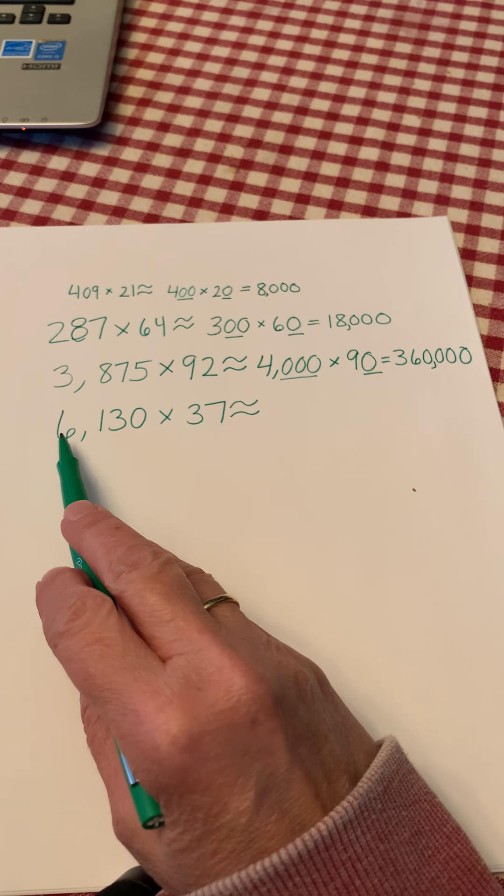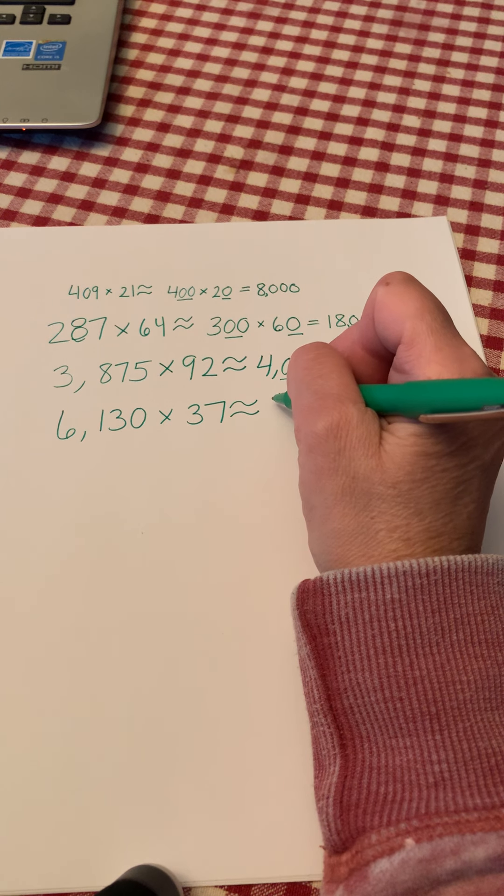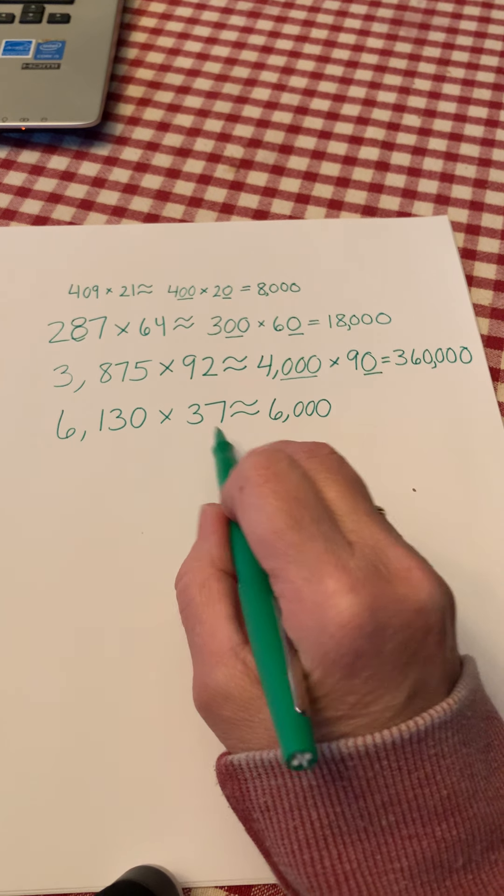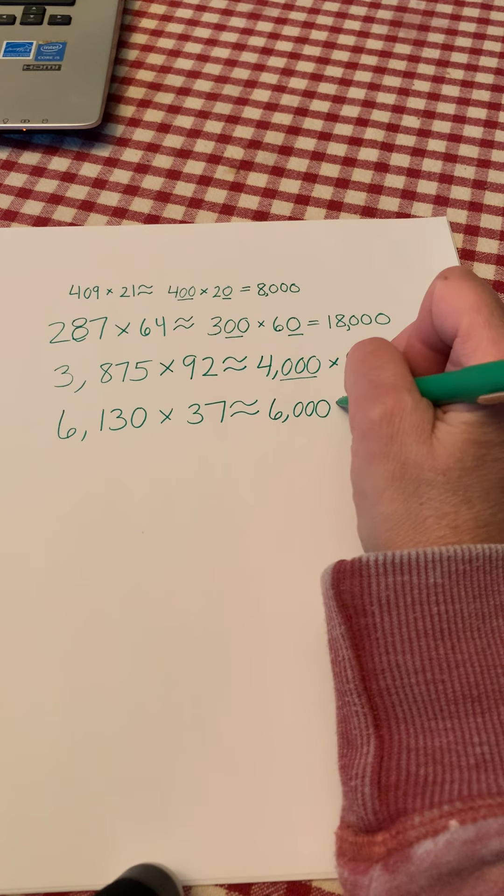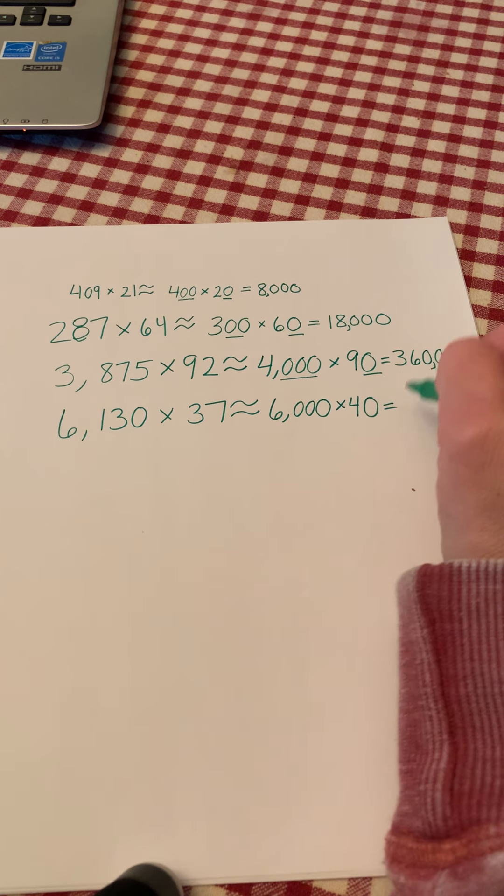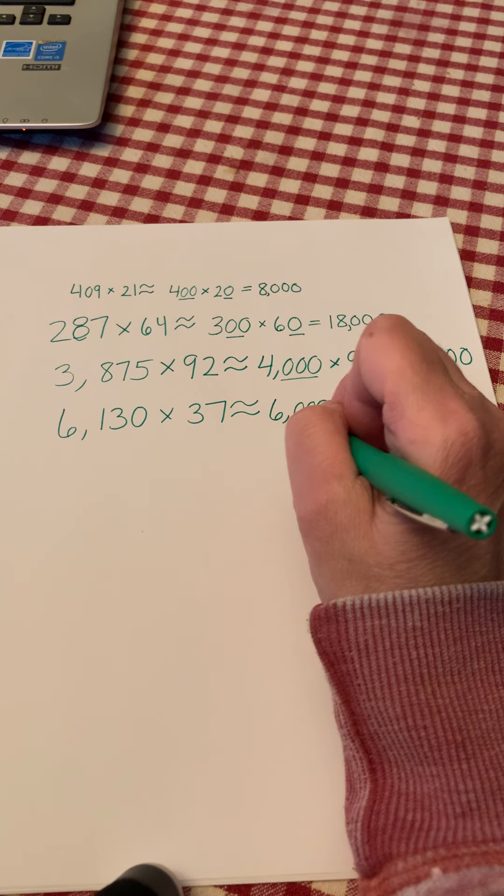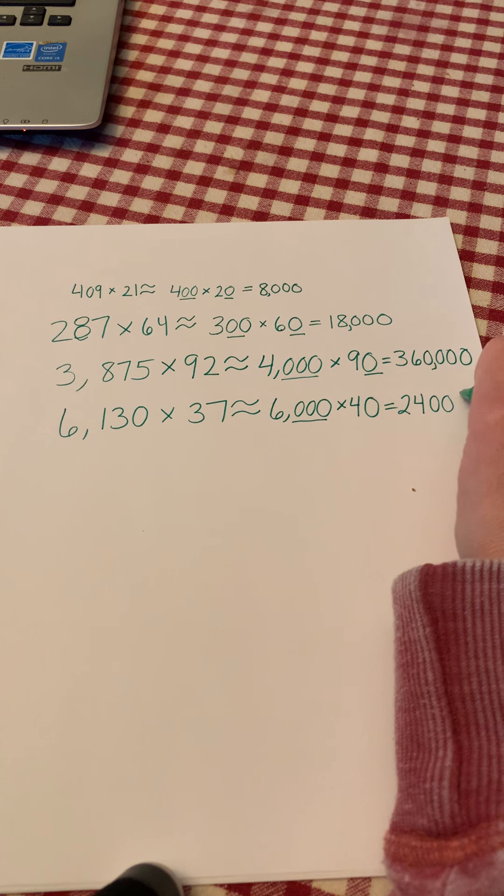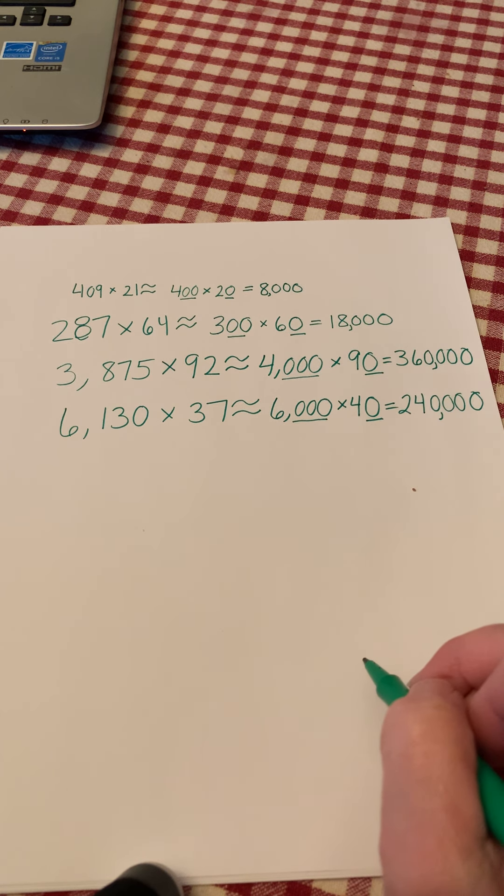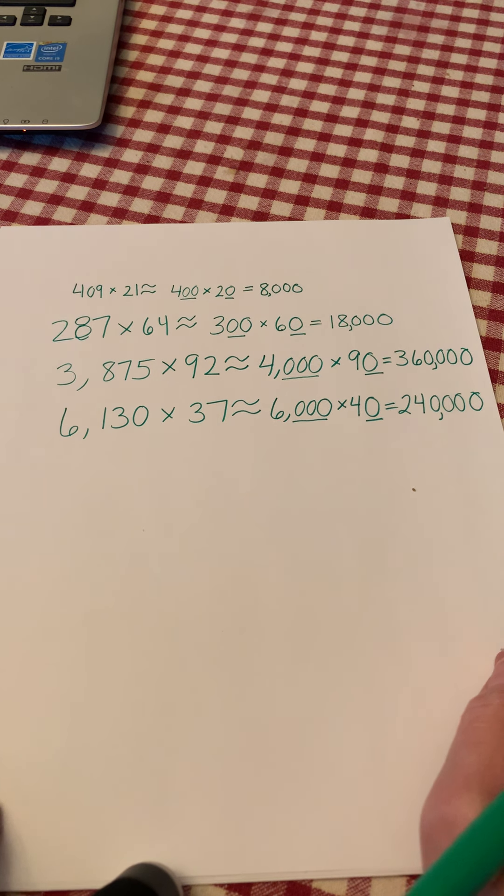All right, welcome back. 6,130, you probably rounded to 6,000 or 6,100, and 37 you most likely rounded to 40. 6 times 4 is 24 times 1,000 times 10, 240,000 is your product. All right, that's a quick review of the things we started learning last week.